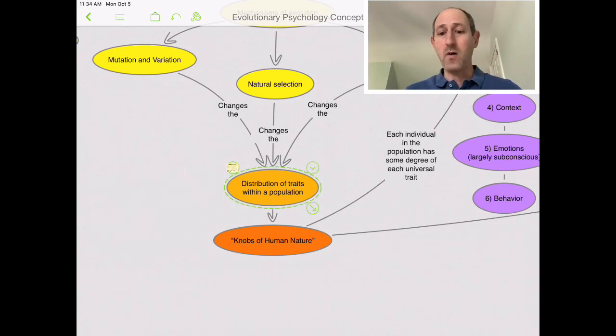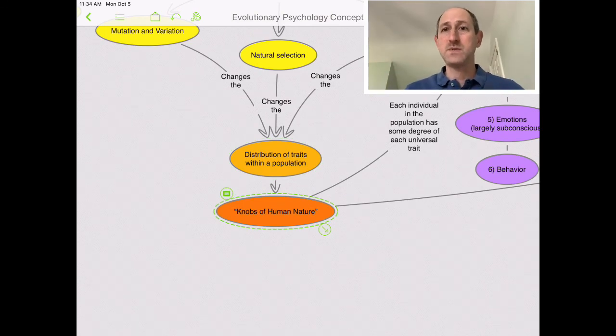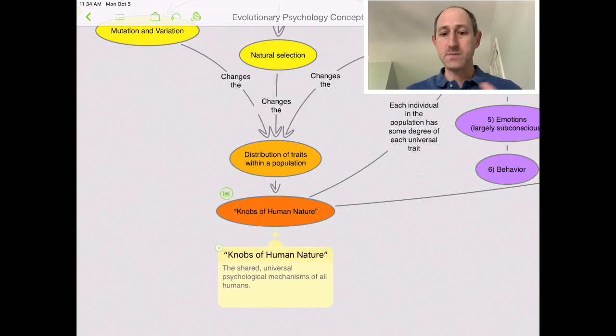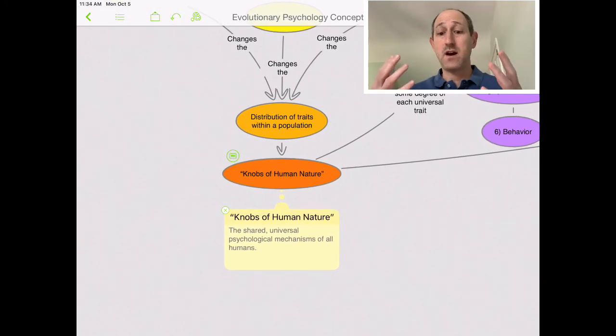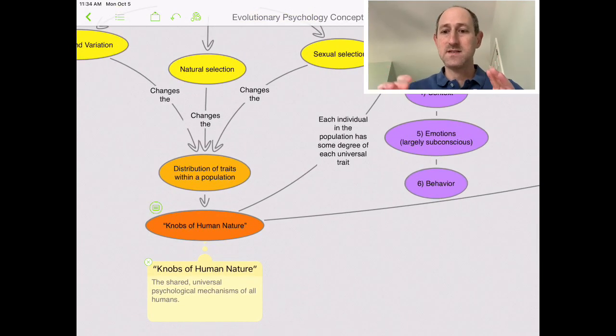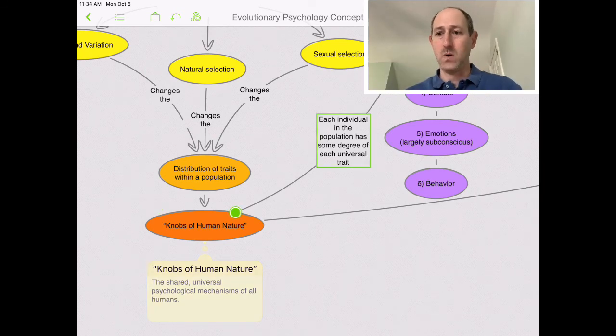And what all of that results in are what we're calling the knobs of human nature, what Robert Wright calls the knobs of human nature. The knobs of human nature are the shared universal psychological mechanisms of all humans in all places.